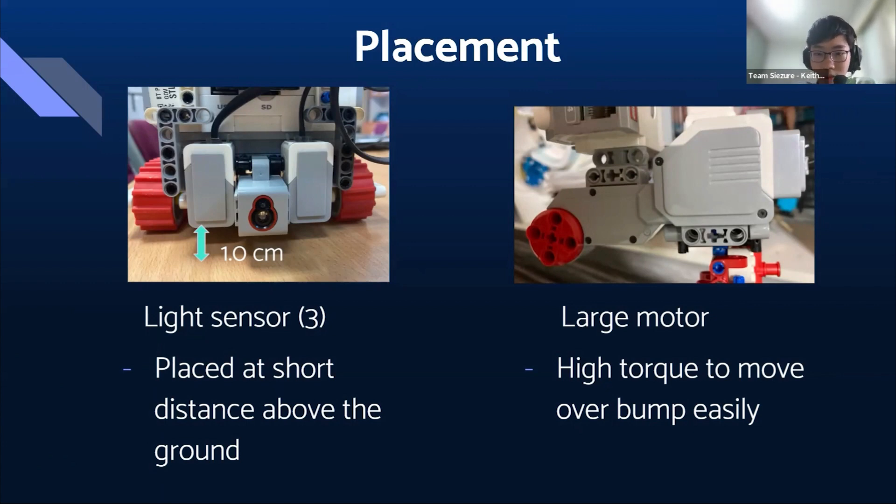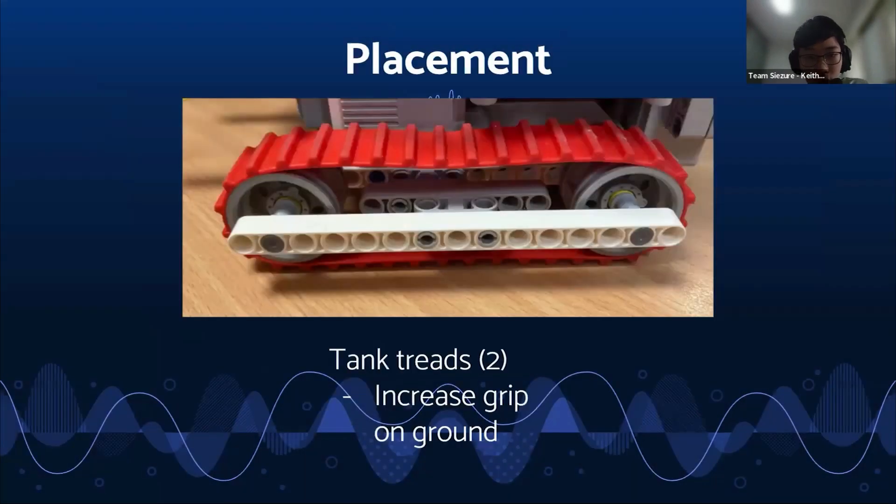We have the large motor which has high torque to move over the speed bumps easily. Then we have the tank treads, they increase the grip on the ground and help us cross over the speed bumps more easily.